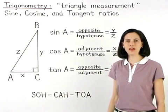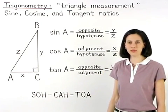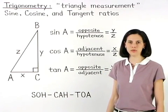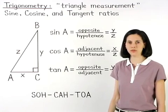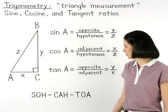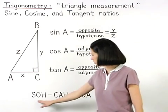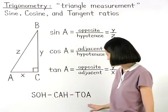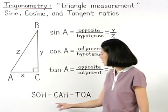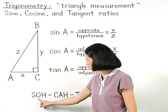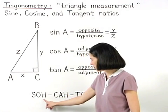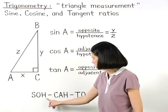An easy way to remember the sine, cosine, and tangent ratios is to use the word SOHCAHTOA. Sine is opposite over hypotenuse.